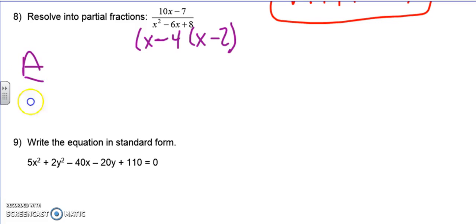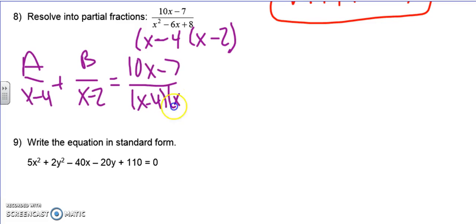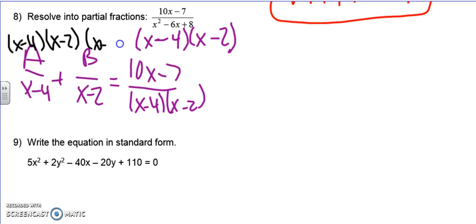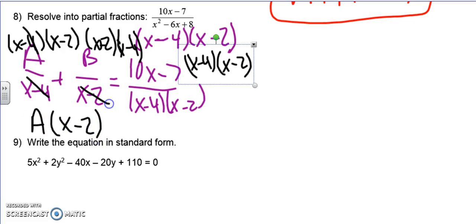So my equation is going to be a over x minus 4 plus b over x minus 2 equals 10x minus 7 over x minus 4x minus 2. Now, just like you guys did last year, we need to get rid of the denominator. So we're going to multiply everything by the common denominator. So I'm going to multiply everything by x minus 4 and x minus 2. So here the x minus 4 cancels. I have a times x minus 2. Here the x minus 2 cancels. I have plus b times x minus 4. The whole thing cancels and I have 10x minus 7.